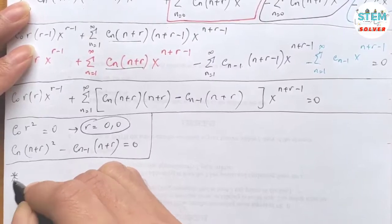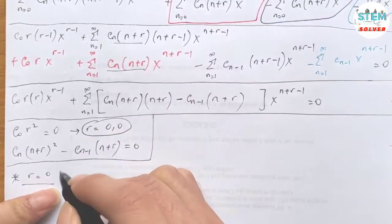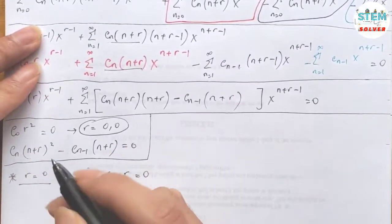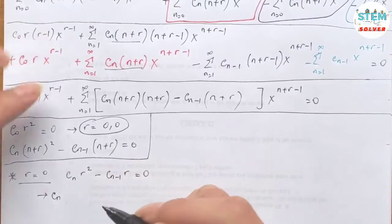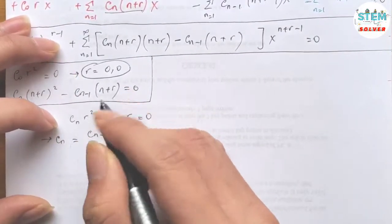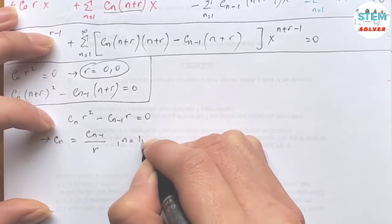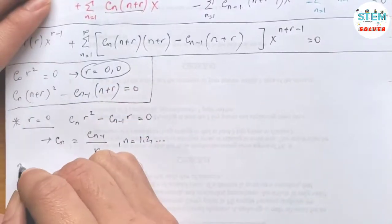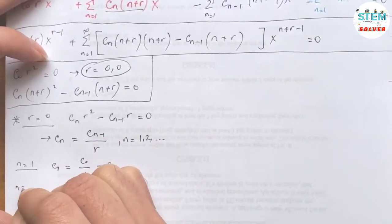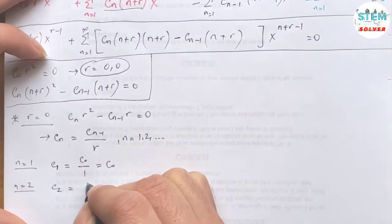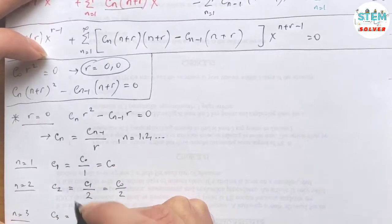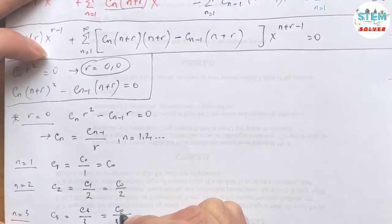Let's find the first solution. Plugging r equals 0 into the recurrence relation gives c_n · n squared minus c_{n−1} · n equals 0. Solving for c_n yields c_n equals c_{n−1} over n. So c_1 equals c_0, c_2 equals c_0 over 2, and c_3 equals c_0 over 3 times 2.